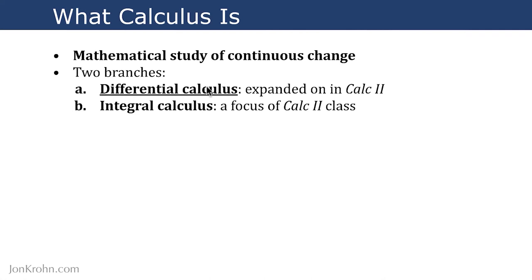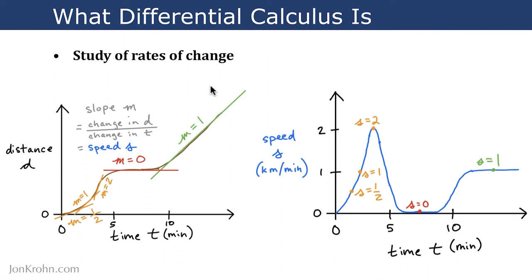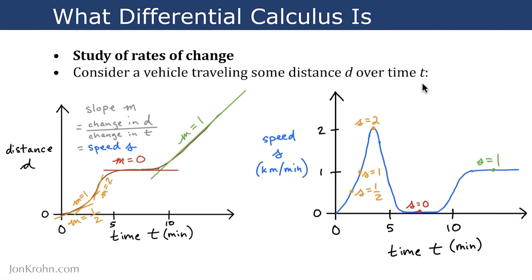Differential calculus is the study of rates of change. If we consider a vehicle traveling some distance d over time — an example covered in great detail at the beginning of Calculus 1 — we can use differential calculus to calculate the derivative, the slope of the line, at any point along this distance-over-time curve, giving us a chart of speed over time. In a nutshell, differential calculus allows us to calculate slopes.